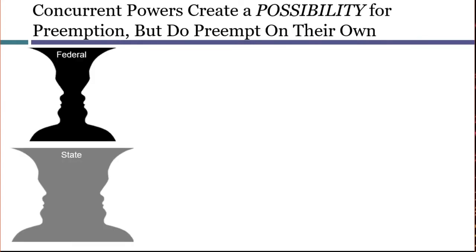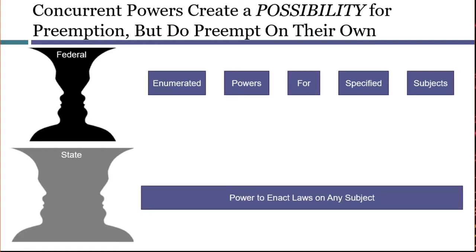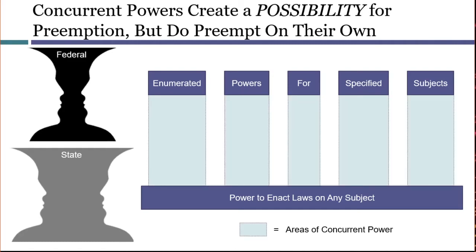The mere possibility that either level of government could enact a law is not enough for there to be preemption. The federal government has power to act only regarding certain enumerated subjects, while the states have power to enact laws on any subject. This means there may be areas of concurrent power where both governments have authority to pass similar kinds of laws. Anyone who has paid both federal and state taxes on a gallon of gas or on their annual income knows that concurrent federal and state laws are quite common. States may act as they see fit, but they'll face a limit if they pass laws that are inconsistent with actually enacted federal statutes or regulations.